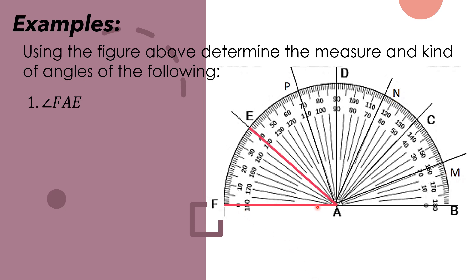This is angle FAE or angle EAF. The position of E and F can be interchanged, but not the vertex which is A. And then as you can see, our angle lies on 40. Therefore, angle FAE is equal to 40 degrees. And since 40 is less than 90 degrees, it is an example of acute angle.